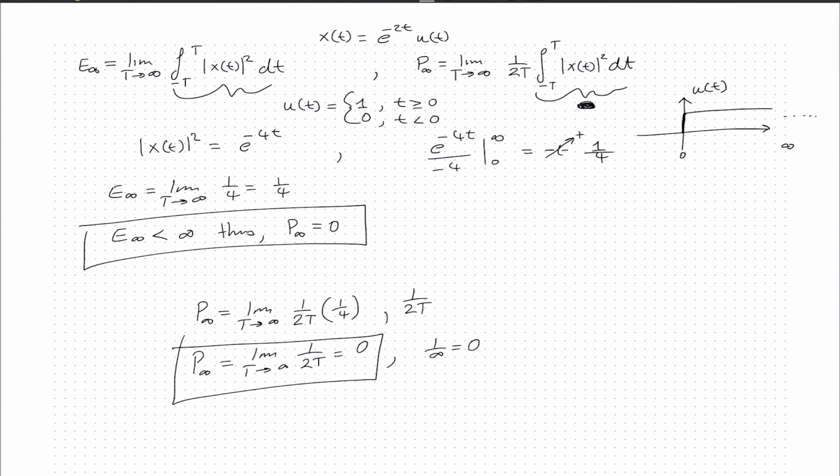Thus, the average power for x(t) is 0. This is an important class of signal: for any signal where the energy is less than infinity, the signal must have 0 average power.